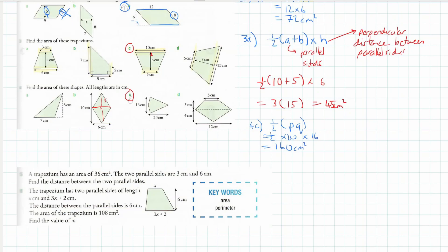So the diagonals are these bits here - that one's 20 and that one's 16.